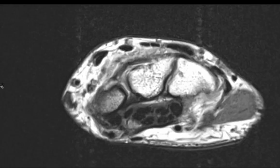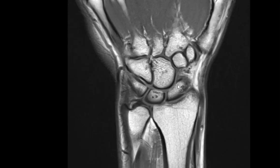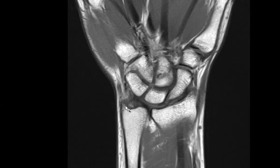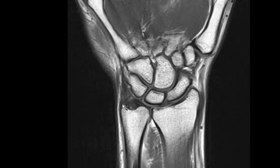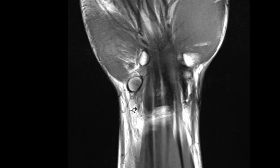One important thing to always look at is the ulnar styloid, because erosive change there can be an early sign of rheumatoid arthritis — one of the earliest places to get erosions in that setting. That essentially covers my evaluation when I look at the MRI examination of the wrist. Feel free to adopt whatever you would like from these, and thank you so much for your attention.